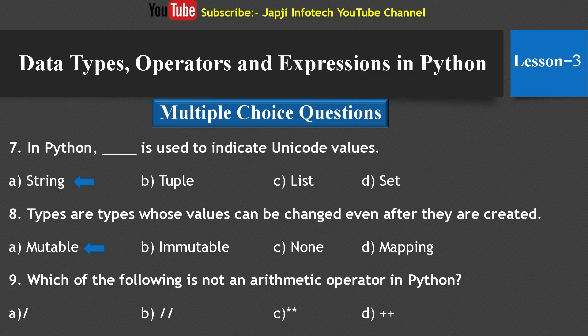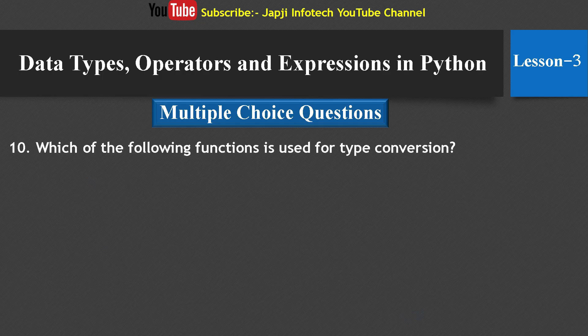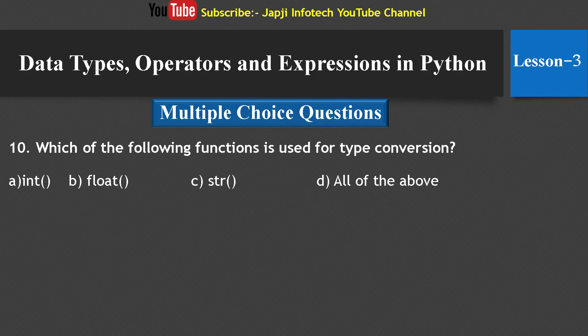The ninth question: Which of the following is not an arithmetic operator in Python? Options are single forward slash, double forward slash, double asterisk, and plus-plus. The right answer is plus-plus — it is not an arithmetic operator. The tenth question: Which functions are used for type conversion? Options are int, float, string, and all of the above. The right answer is all of the above.